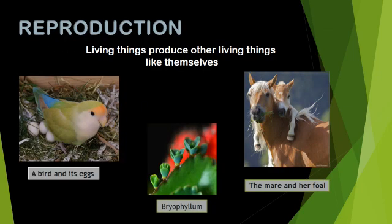Reproduction. The process by which living things give birth to young ones of their own kind is called reproduction or procreation. Some animals give birth to their young ones. Some lay eggs from which the young ones hatch out. Plants reproduce through seeds, leaves, parts of stem, etc.